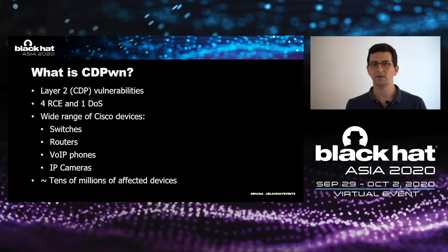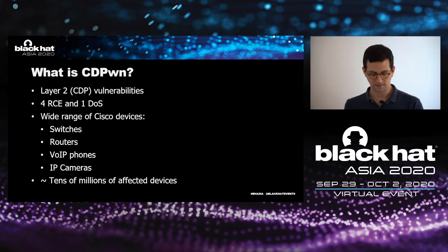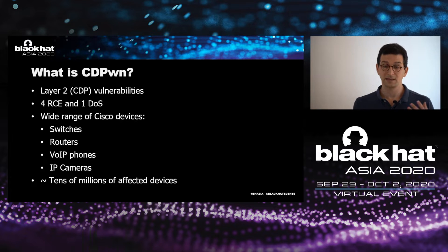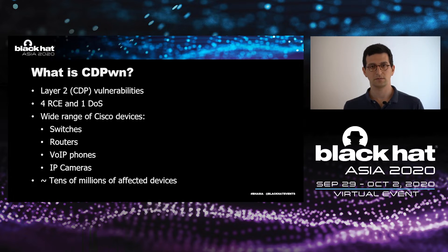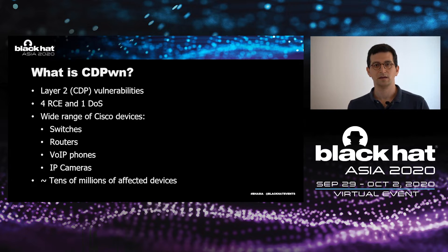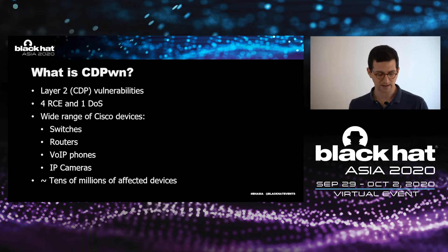So what is CDPwn? It is five vulnerabilities: four remote code execution vulnerabilities and one denial of service vulnerability in the implementation of Cisco's CDP protocol. It affects a wide range of Cisco's devices — switches, routers, IP phones, and IP cameras — with an estimated number of around tens of millions of devices affected.